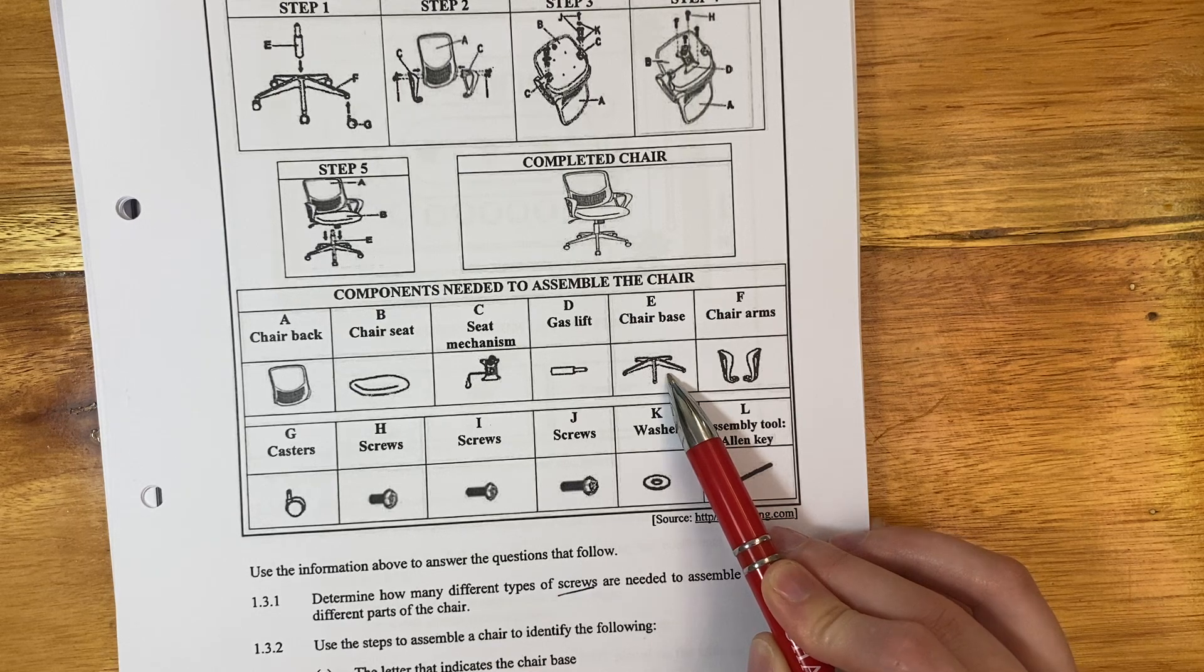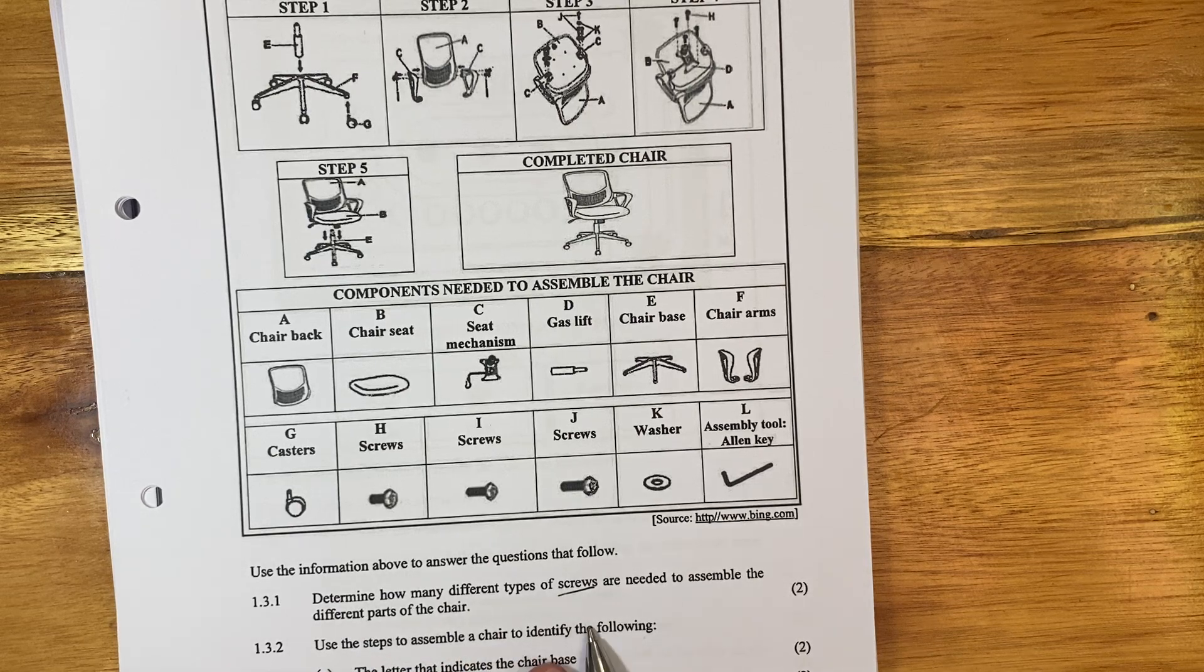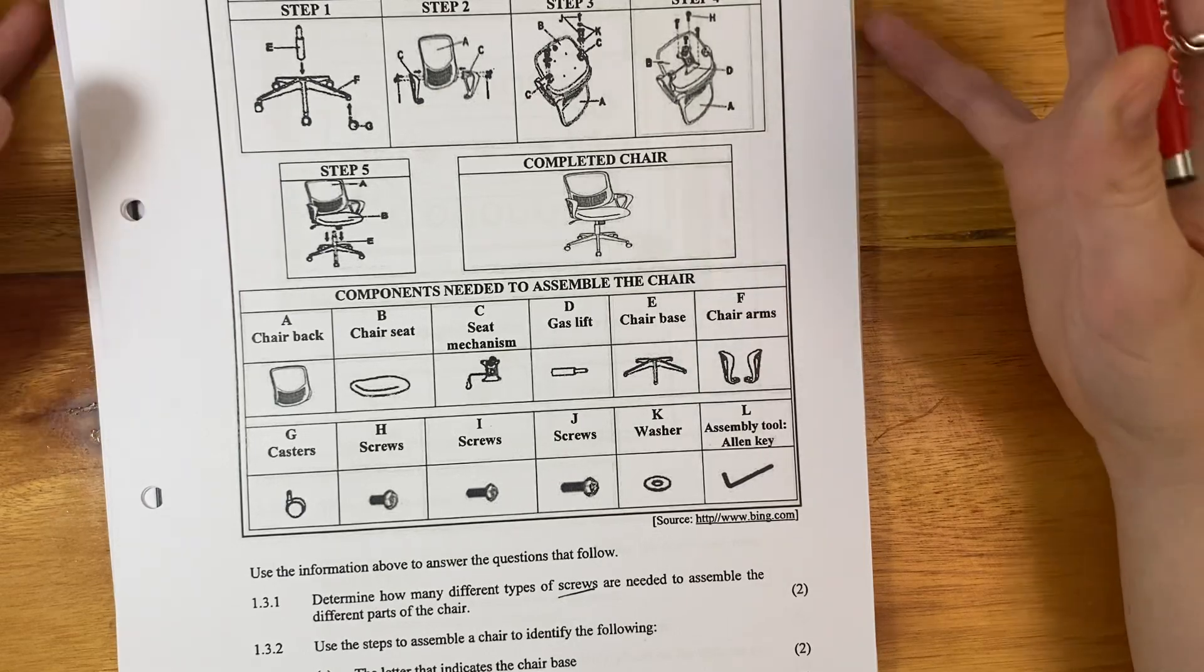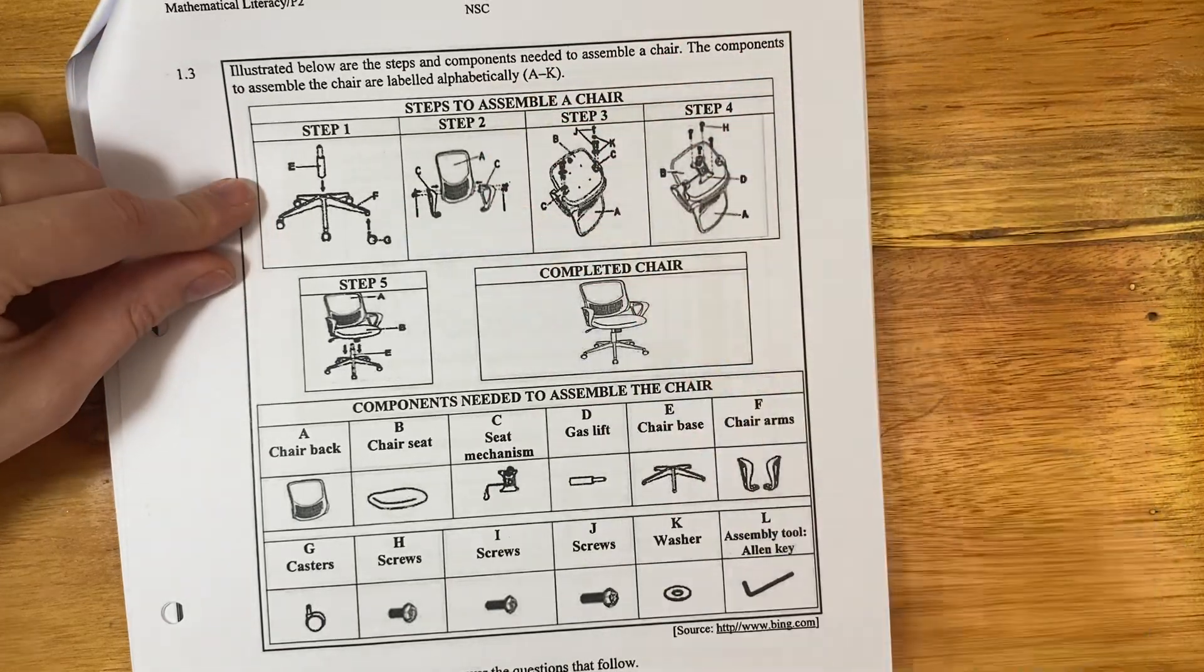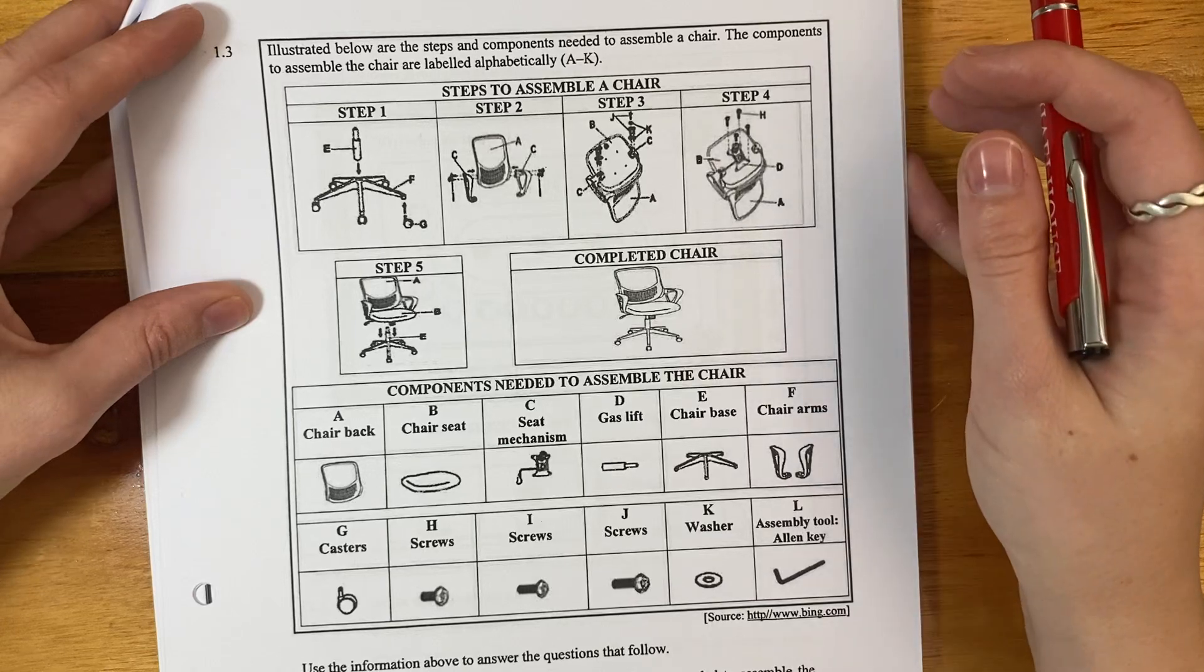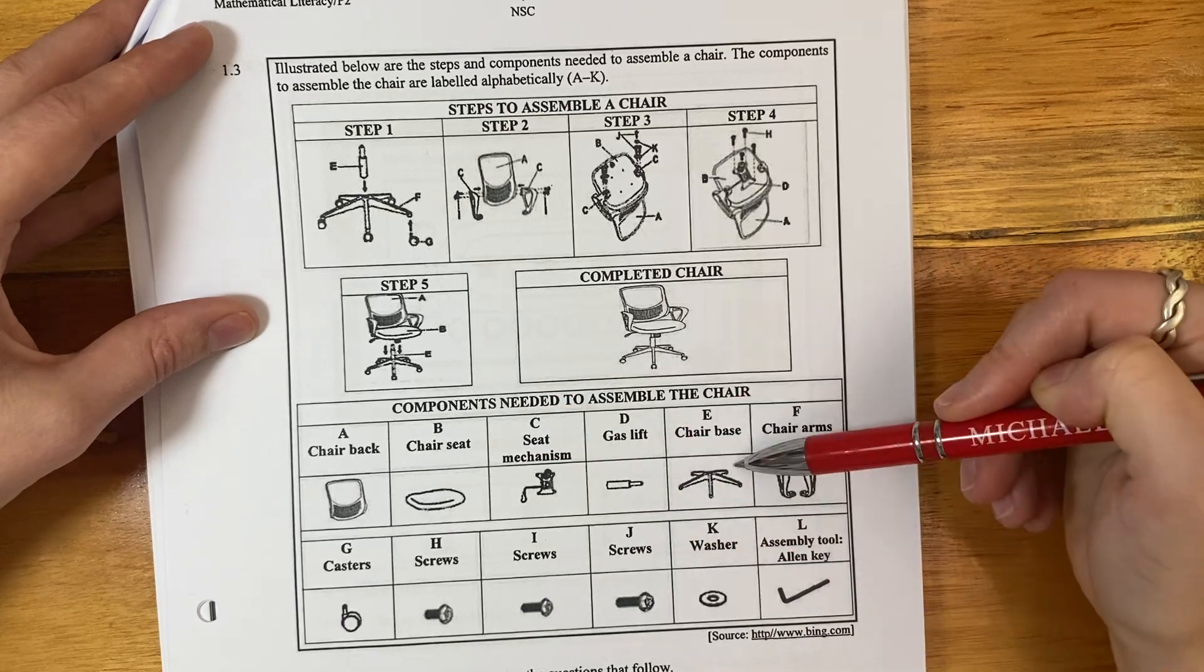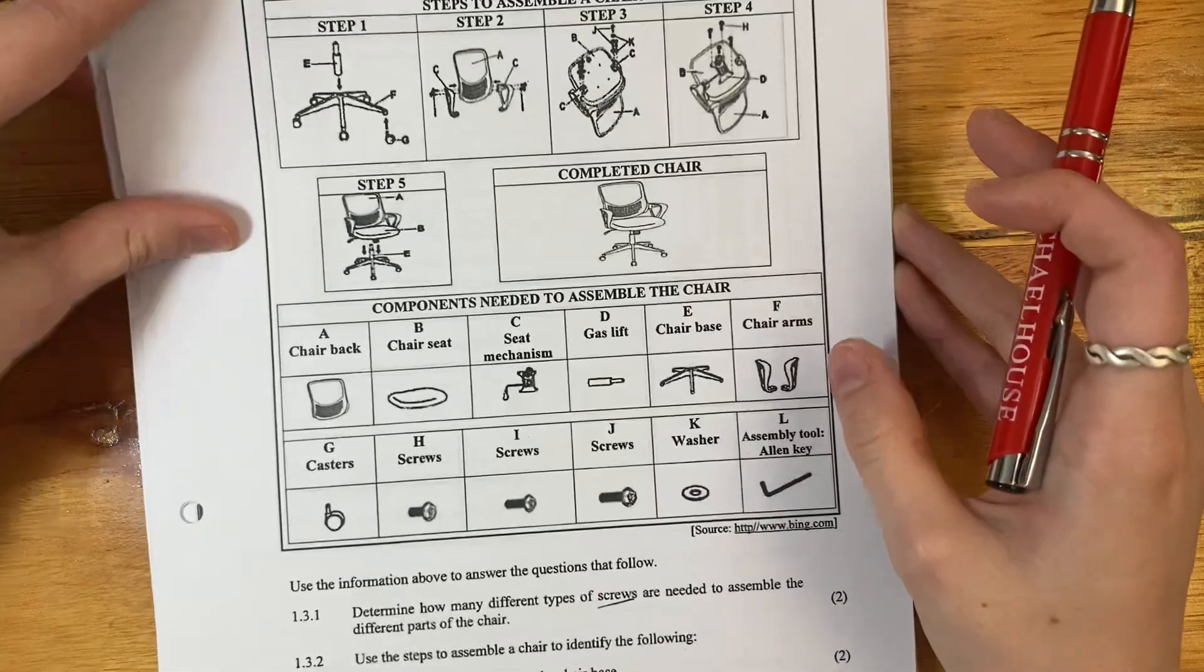And it's interesting here because it says use the steps to assemble a chair to identify. So we have to use this, but we also have to use this. So here we would think that it's E. But if you look in the actual steps over here, and that's what it asks for you to use the steps to assemble, it's actually F. So you need to be careful here. So it's actually F. It's not E because here this is the components. And the components is E. And the steps, it's F. So the answer is F.